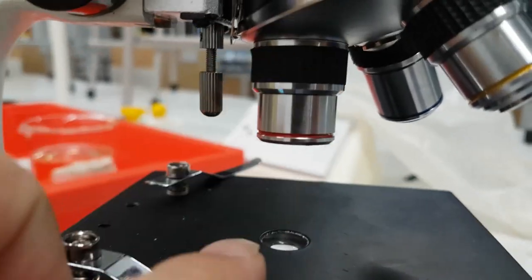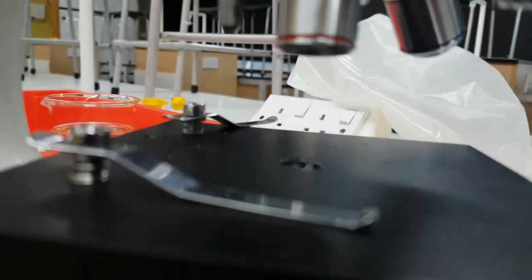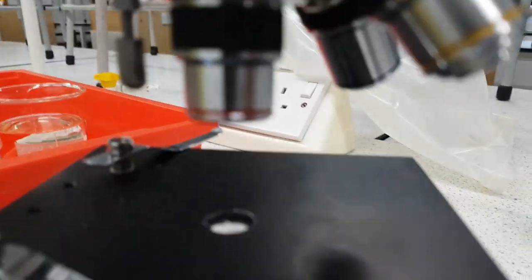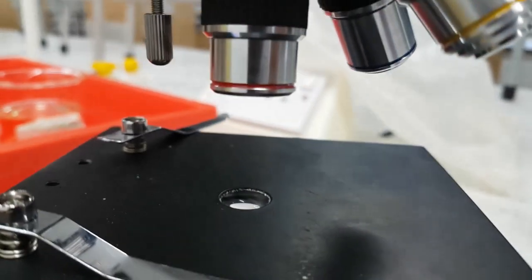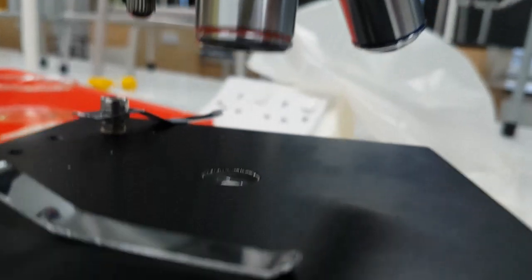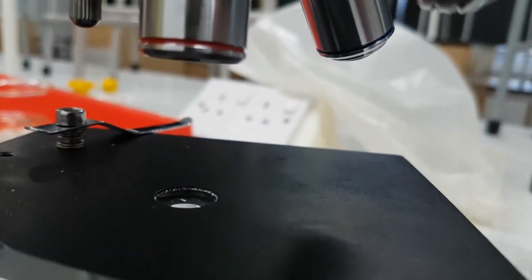And the objective lenses are over here. So basically the reflected light is going to go through the slide which will be placed there and then magnified using the objective lens and that's the idea.